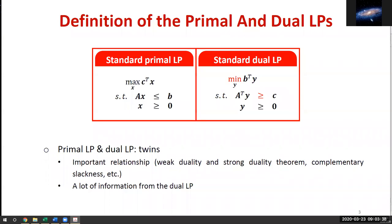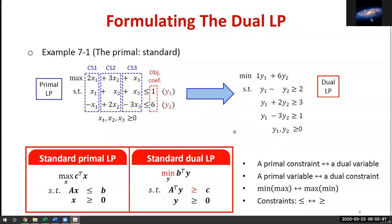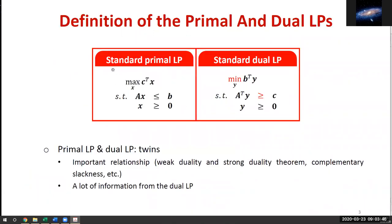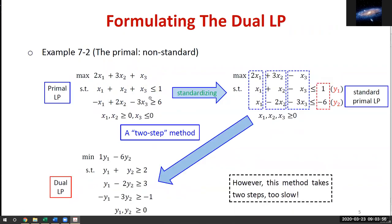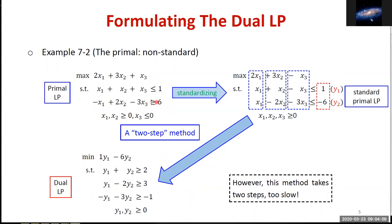Today we're going to see two very important theorems. If the primal LP is exactly in standard form, we can simply use the definition to make the dual. However, in real cases it's not always standard — for example, a constraint might be greater than or equal to six. Let me annotate so you can see clearly.